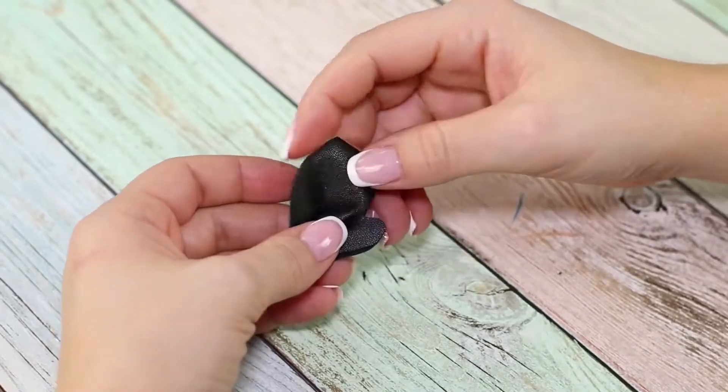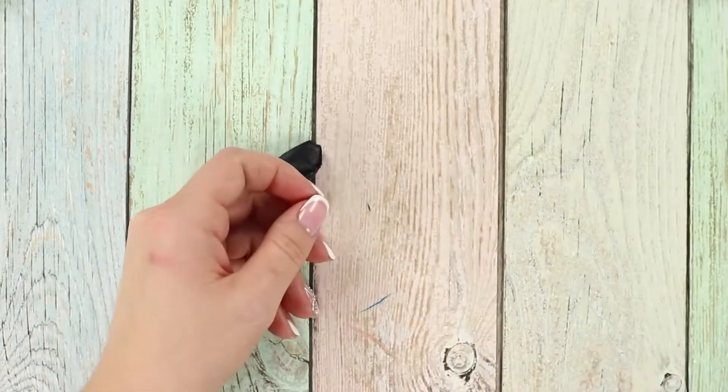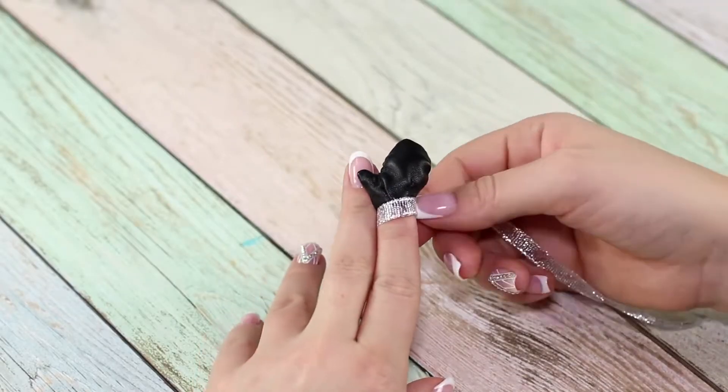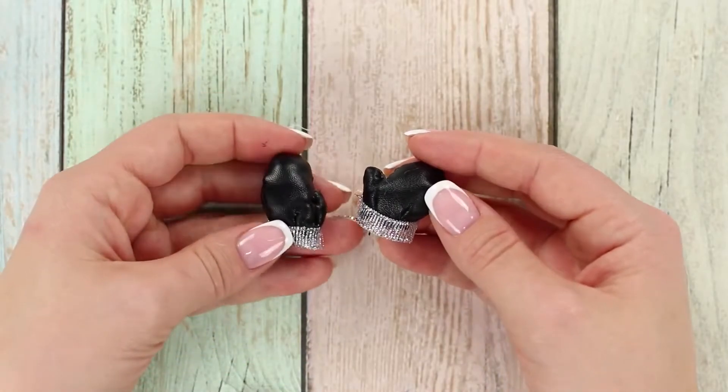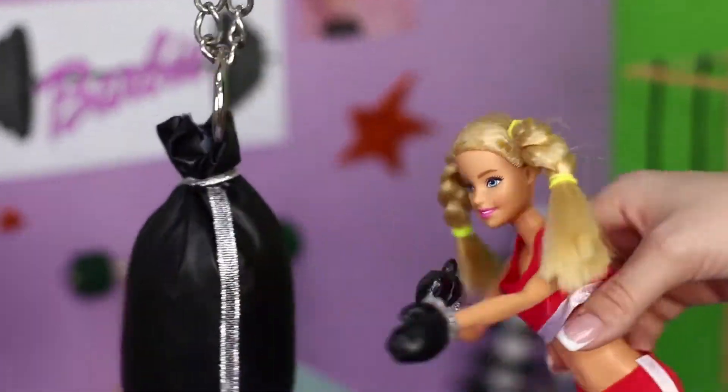Fold in half and sew the edge. Fill it with cotton. Decorate it with a ribbon and make two of these gloves. Women's boxing makes the body beautiful and strong. And besides, Barbie can use some self-defense skills.